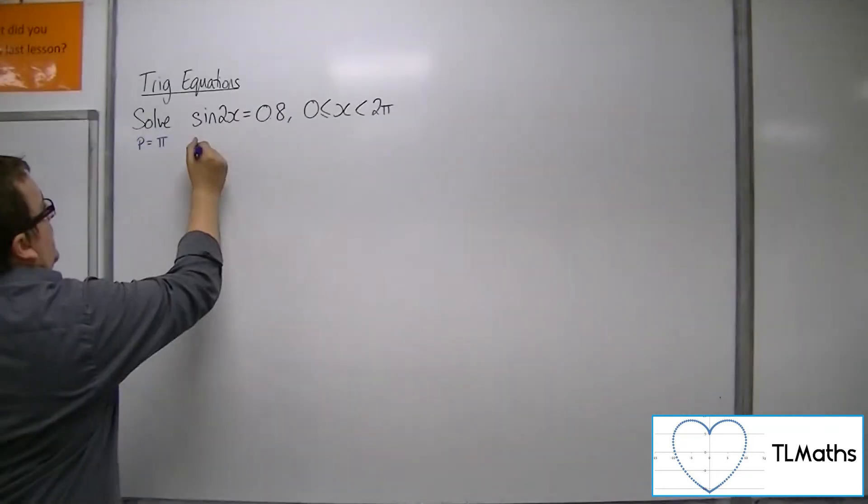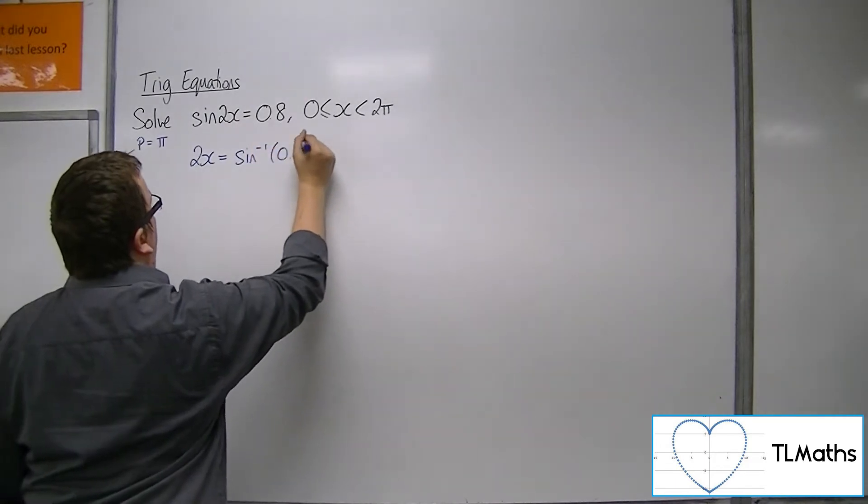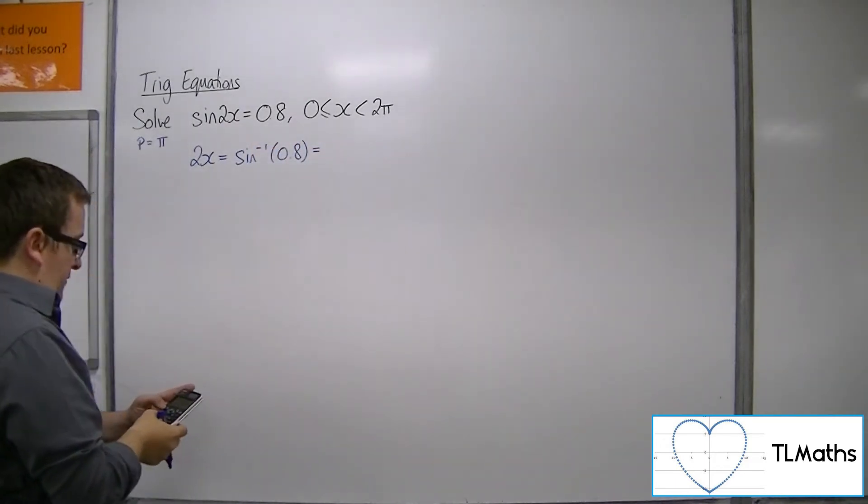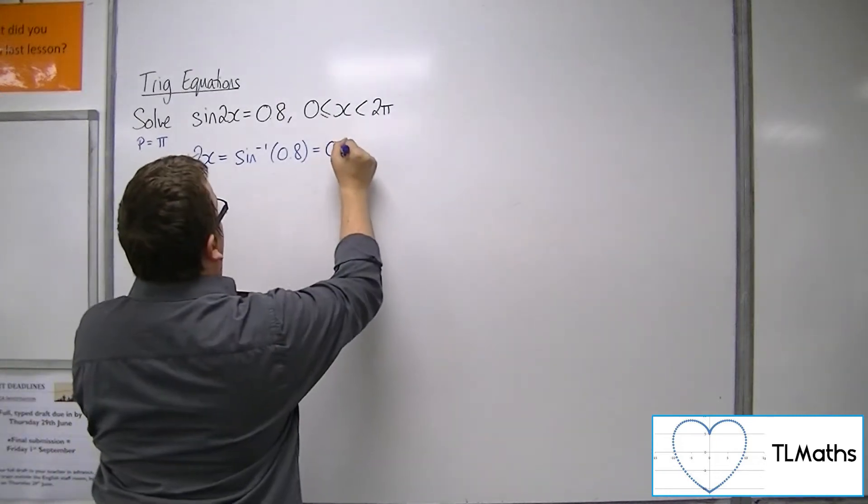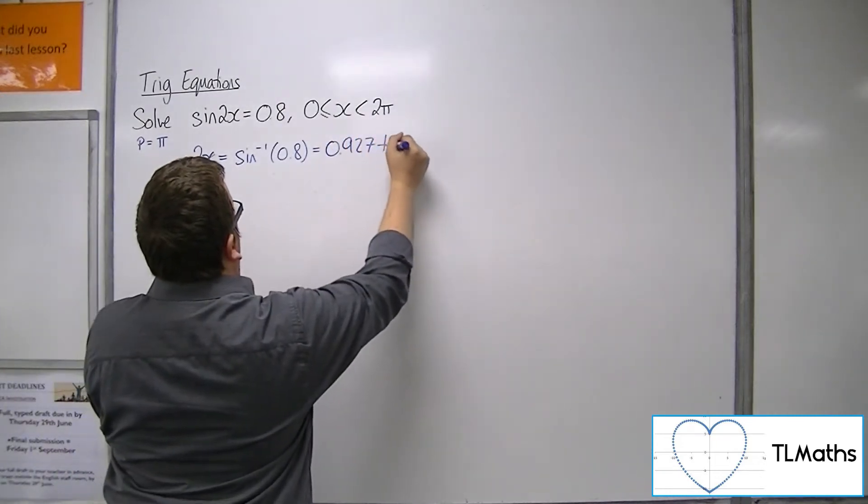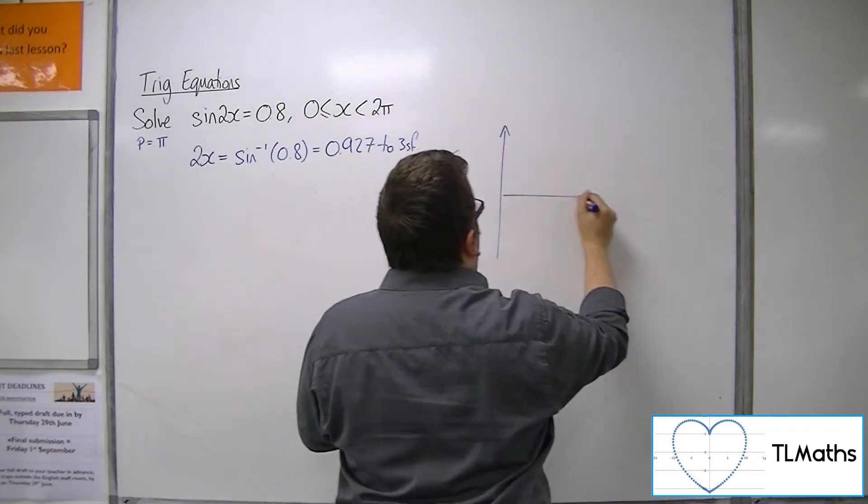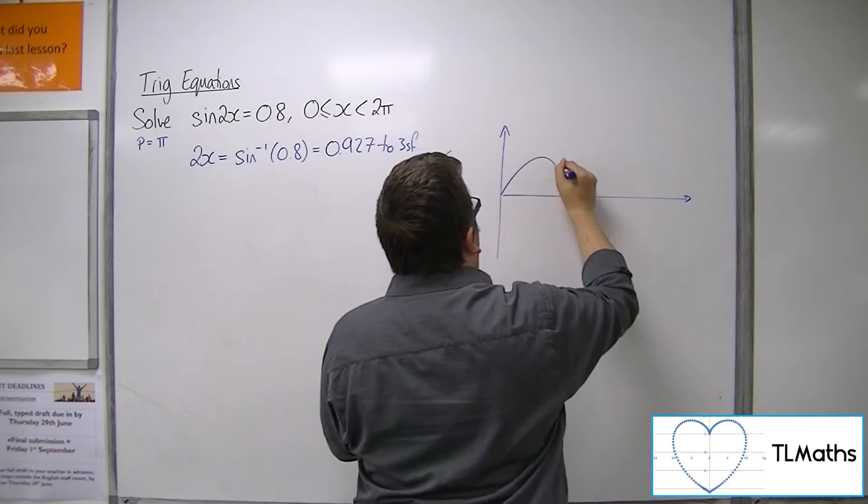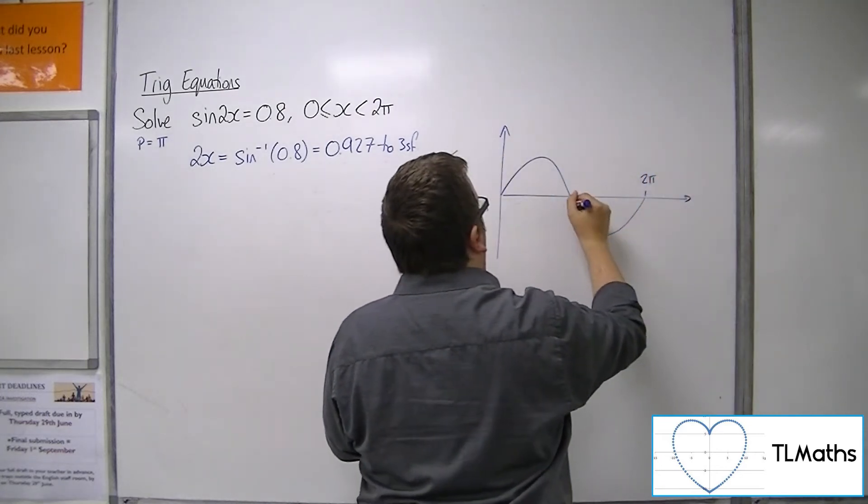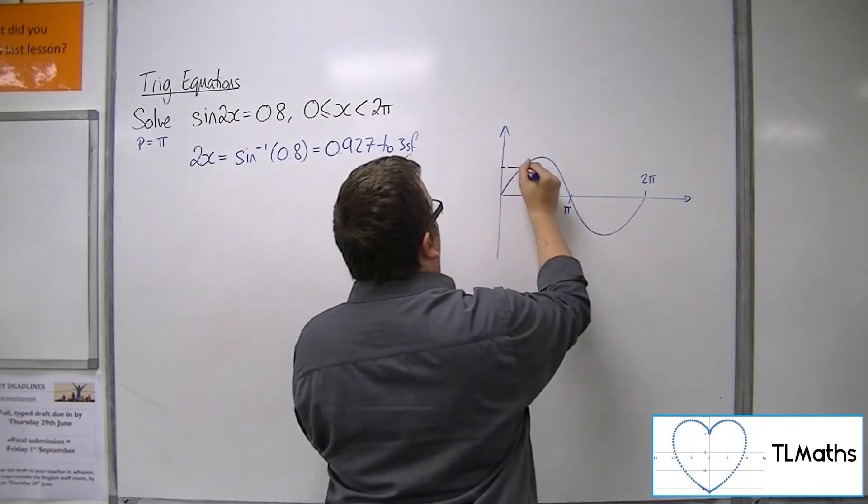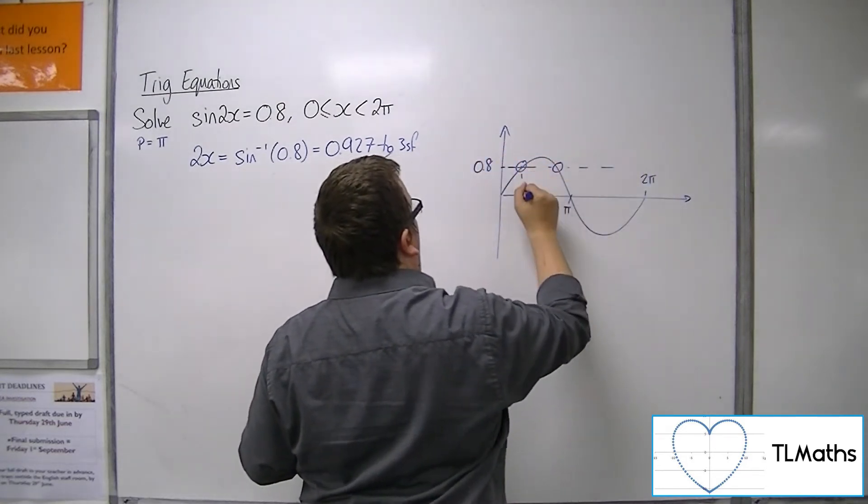So if we inverse sine both sides, inverse sine of 0.8 is 0.927 to 3 sig fig. All right, so let's sketch sine. Now we're sketching sine as if it's just sine x between 0 and 2π. There's 0.8, so we're getting two solutions.